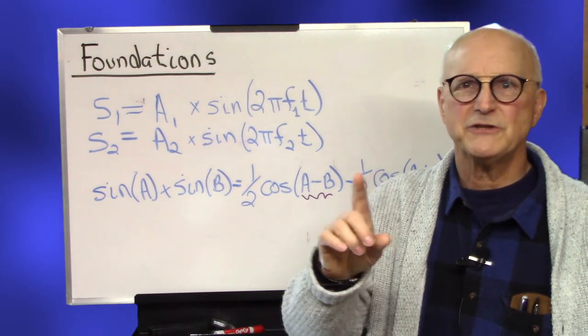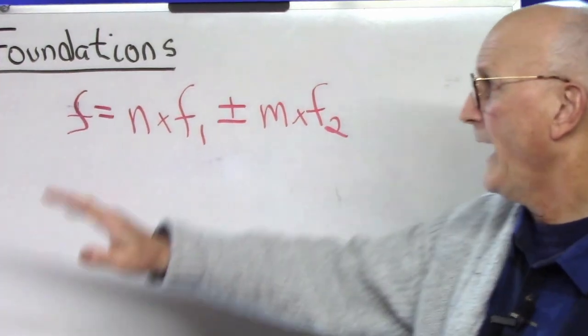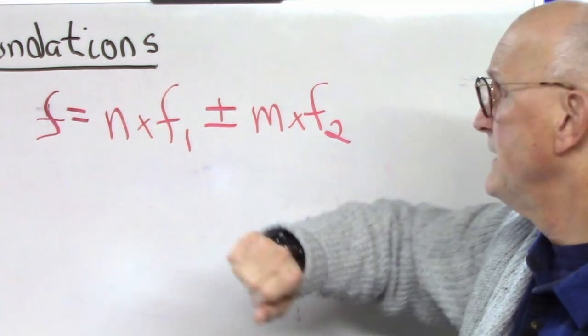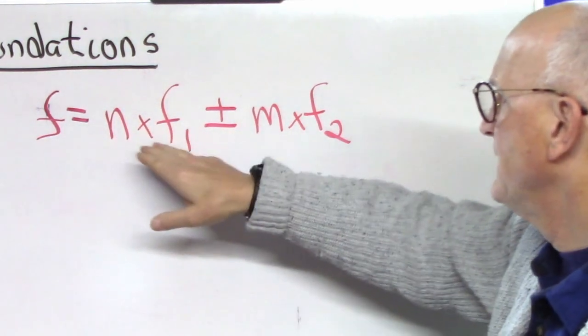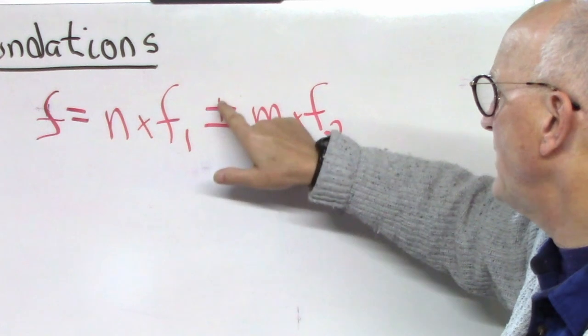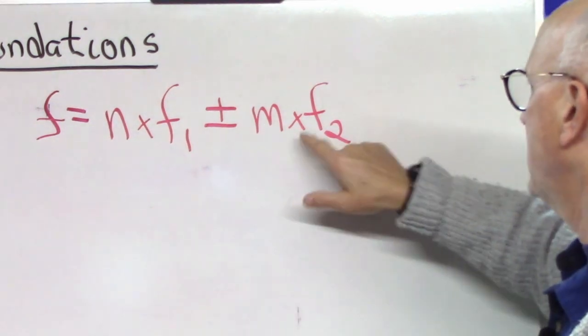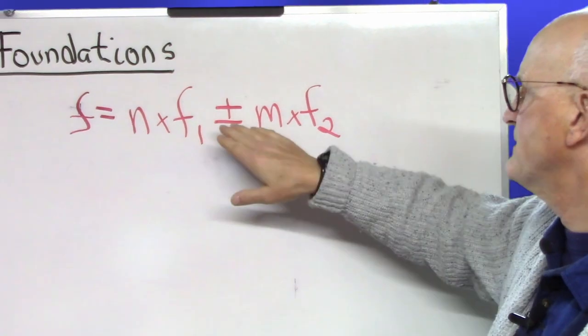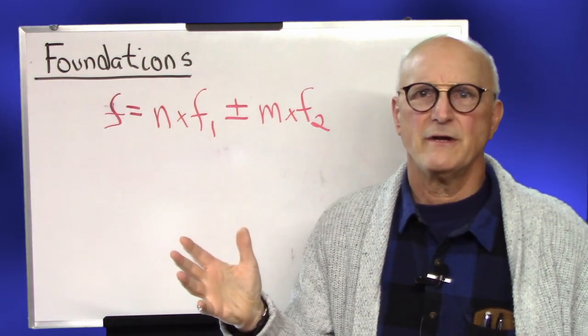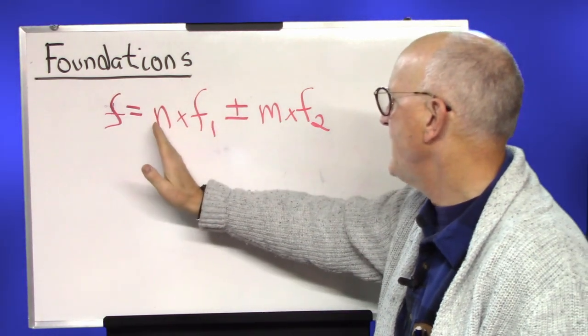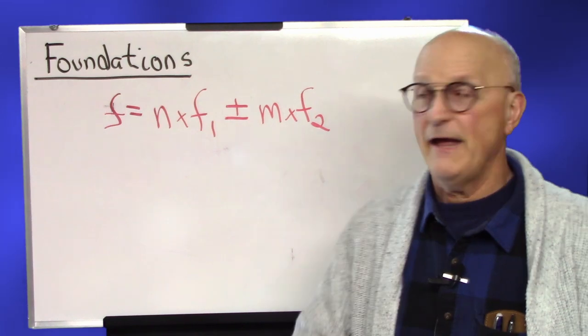We have this potentially still somewhat intimidating, somewhat compressed formula. The resulting frequency is equal to n, which is an integer, a number like 1, 2, 3, 4, 5, a whole number, times the first frequency, plus or minus m, which is also a whole number like 1, 2, 3, 4, times the second frequency. Now, like I said, it's somewhat compressed because you have this plus or minus. But if we were to uncompress the formula for any given values of n and m, we would have three equations to solve.